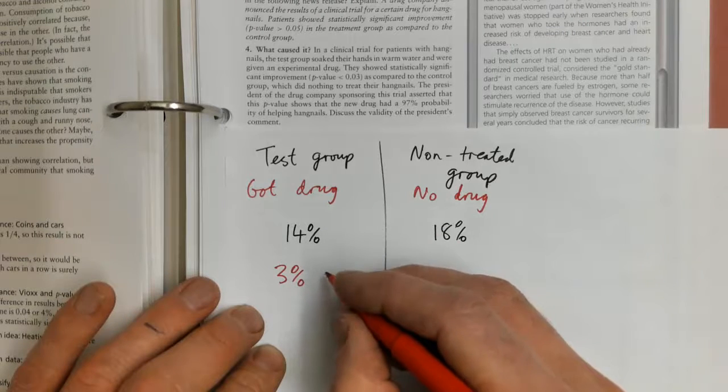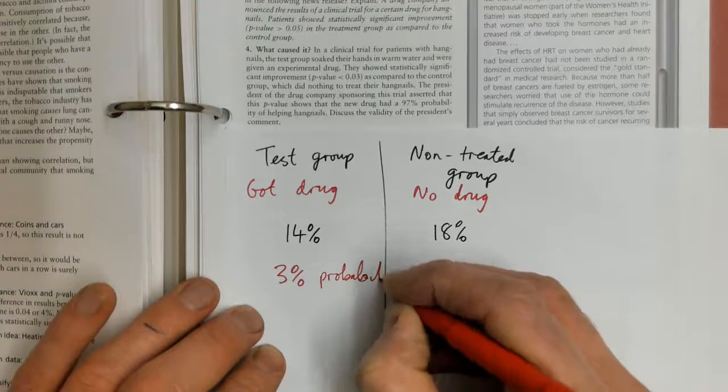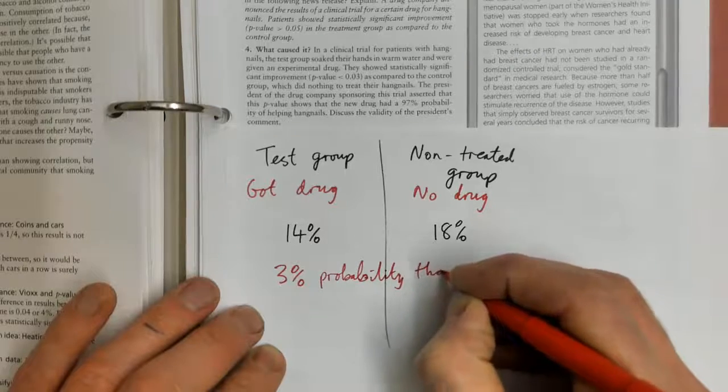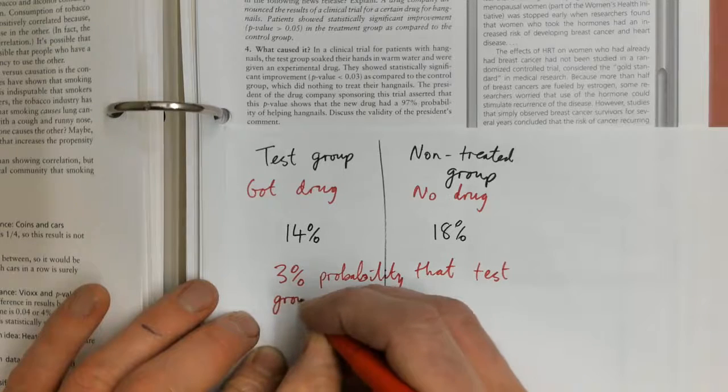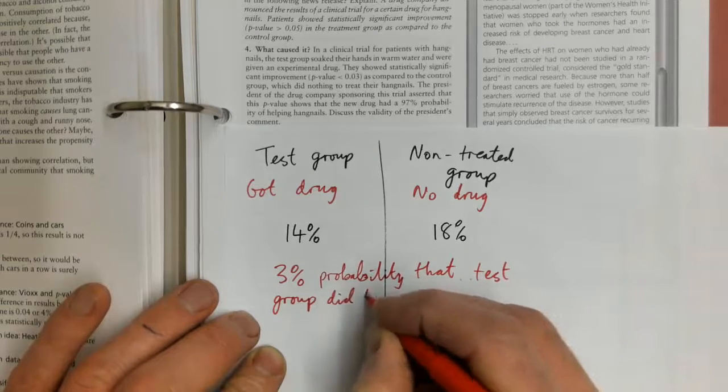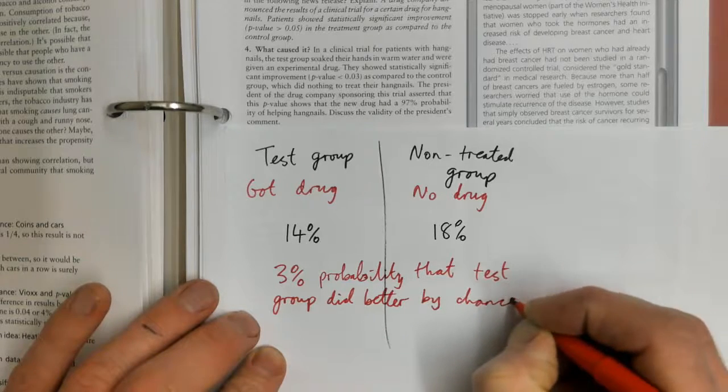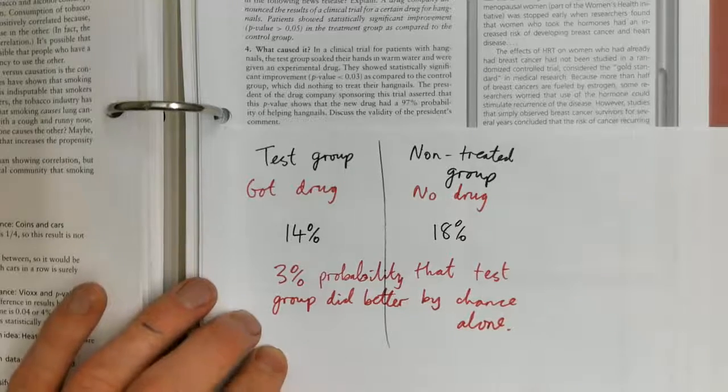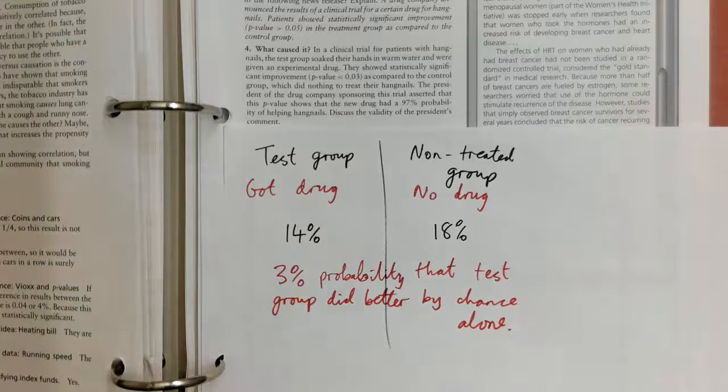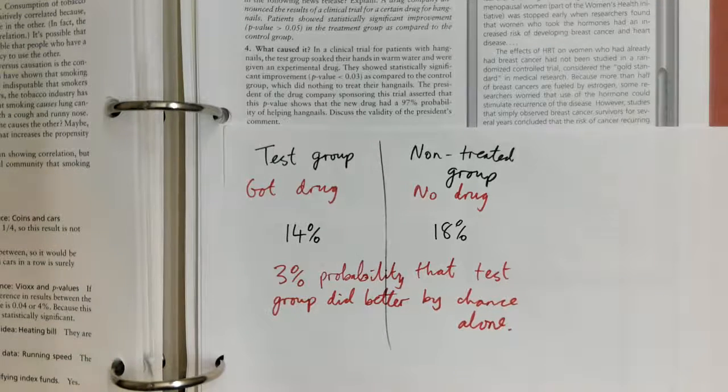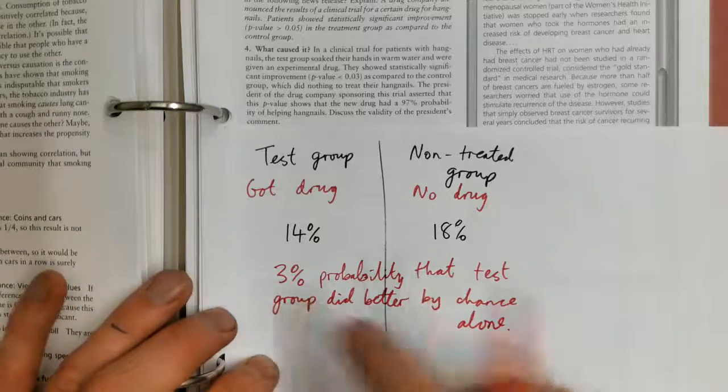So the three percent probability that the test group did better by chance alone. As is kind of agreed all over the world, often five percent is the cutoff. So they're like, well, three percent is less than five percent.